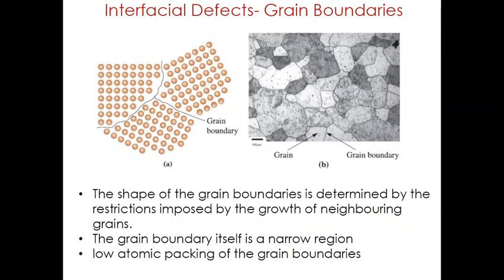Next we will discuss the final type of defect: interfacial defects or surface defects, focusing on grain boundaries. Interfacial defects are boundaries that have two dimensions and normally separate regions of the material that have different crystal structures or crystallographic orientations. These imperfections include external surfaces, grain boundaries, phase boundaries, twin boundaries, and stacking faults. In today's session we will limit our discussion to grain boundaries.